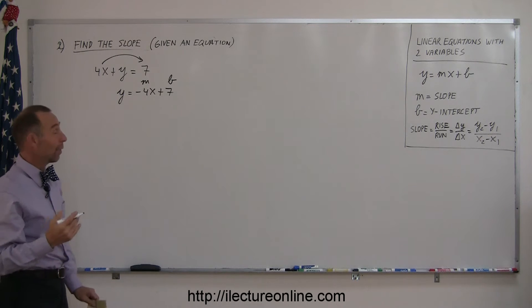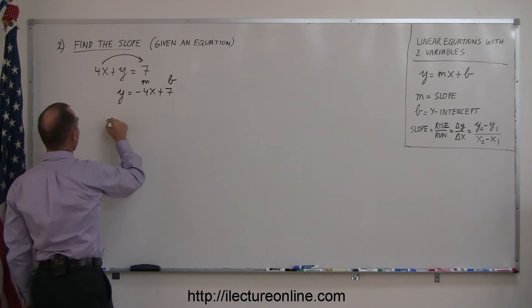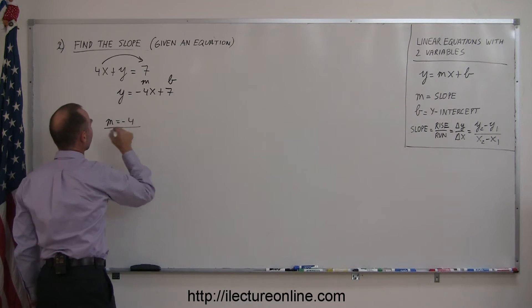So in this case you can just read it right off. Say okay, m equals negative 4, and you're done.